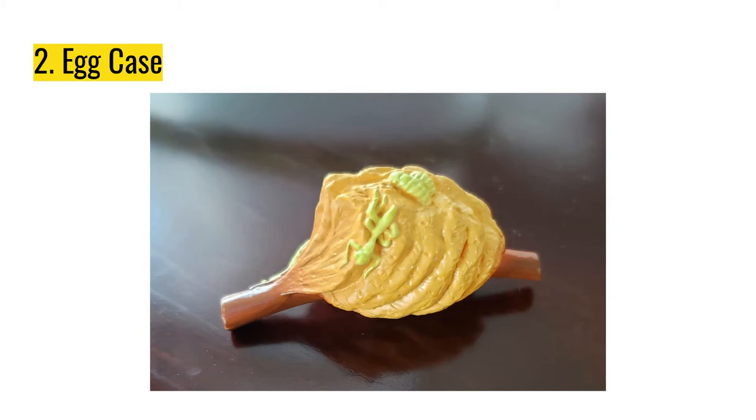The nymphs come out of the egg case in the spring when the weather warms up. They stay around the empty case for a while after they emerge. It is during this time that they may feed on each other. Nymphs are very vulnerable to predators like bats, birds, and spiders.